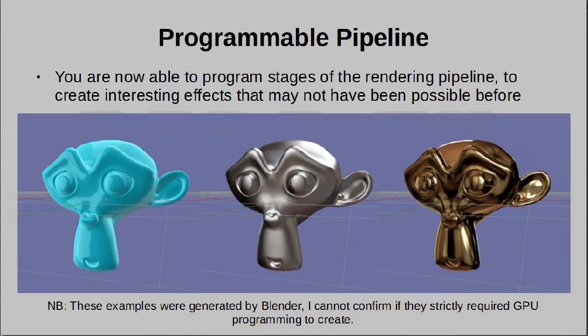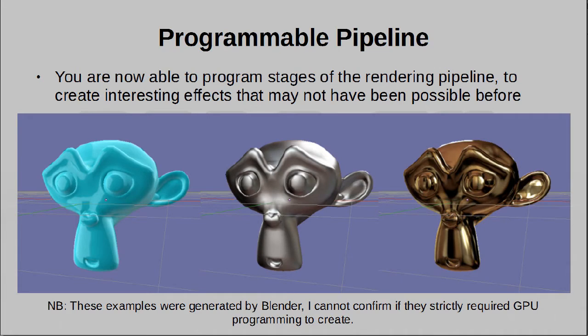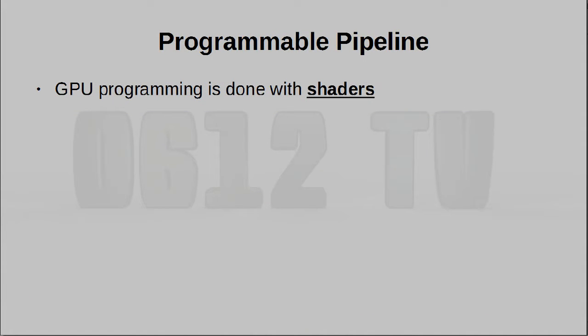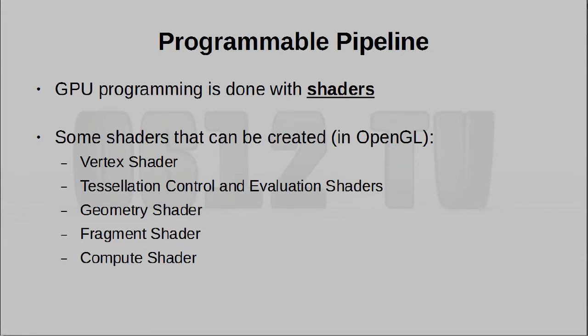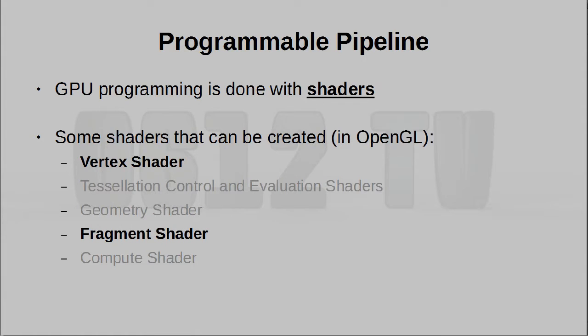One of the more recent developments in graphics cards is the ability for you to program certain stages of computation that are actually performed on your graphics card. You are able to change up how your graphics card performs certain actions — some of them are what we've discussed earlier — and in doing so we can make it draw nicer images, or use it for a completely different purpose: general-purpose computation. These programmable stages on your graphics card are known as shaders. Graphics packages like OpenGL actually provide quite a few different types of shaders. We'll focus on two of them: a vertex shader and a fragment shader.